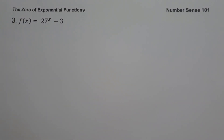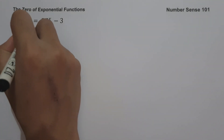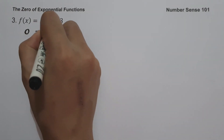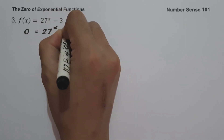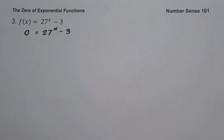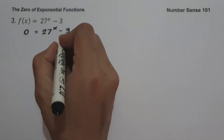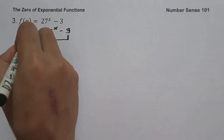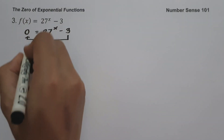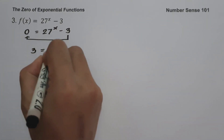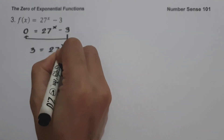On example number three, f(x) = 27 raised to x minus 3. To find the zero of the given function, let us equate the function equal to zero: 0 = 27 raised to x minus 3. Then let us solve for x by moving negative 3 to the side of zero, giving us 3 = 27 raised to x.